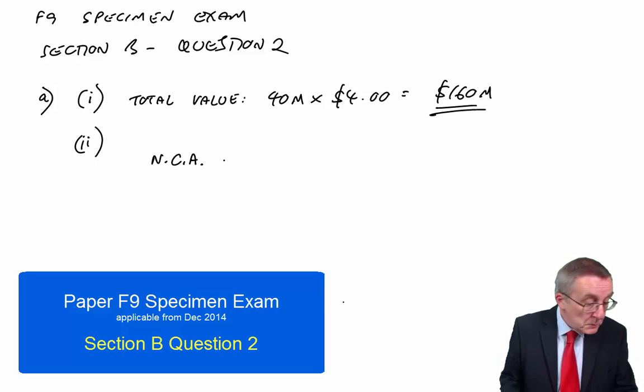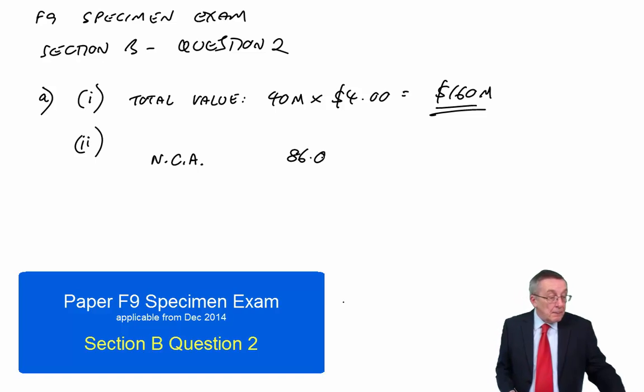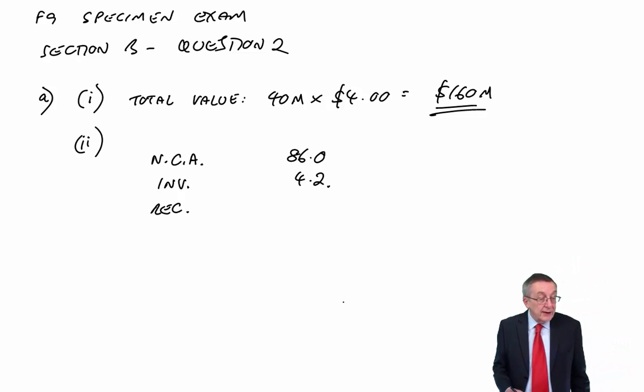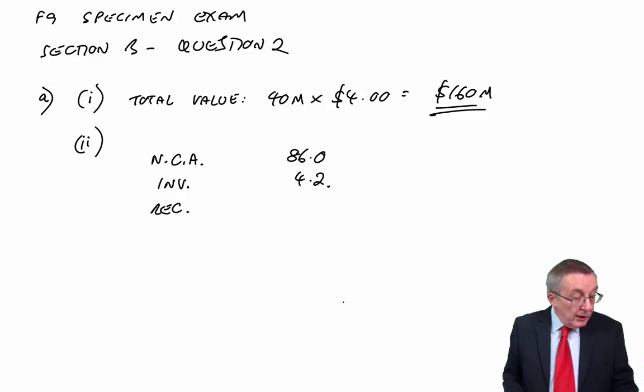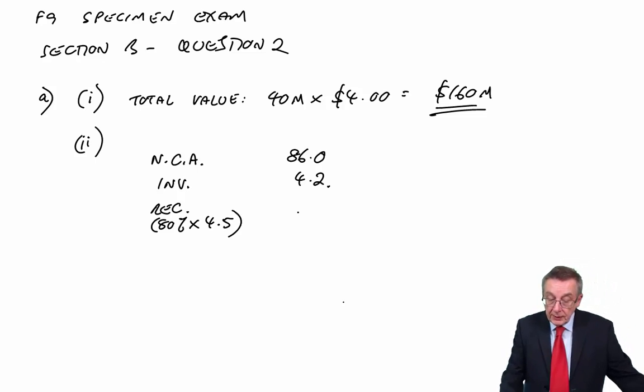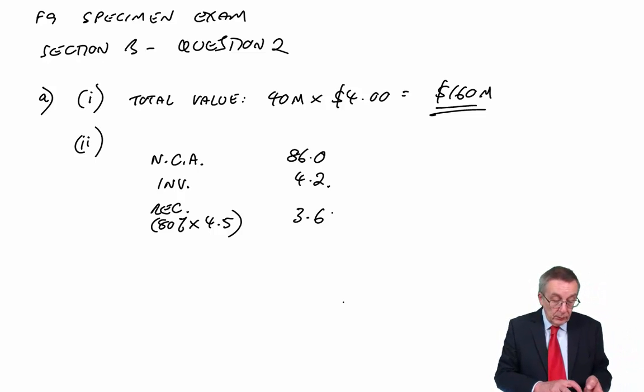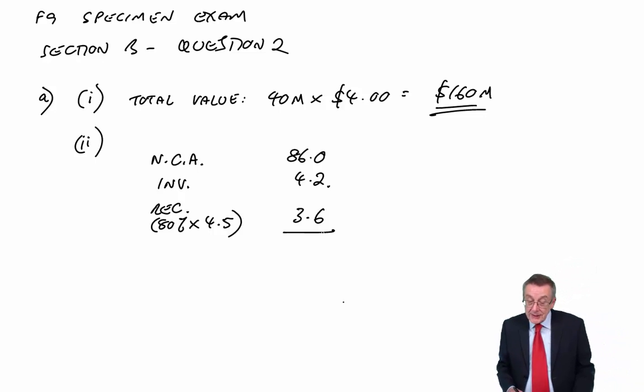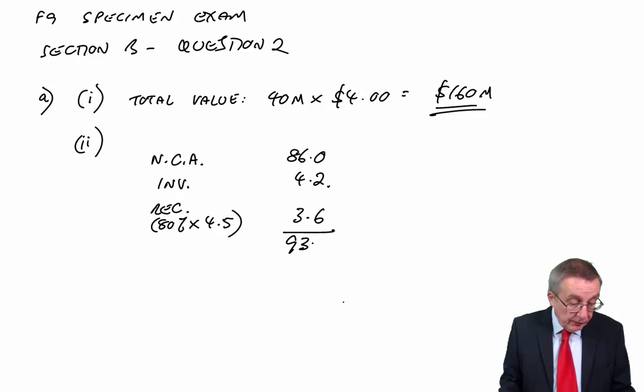The non-current assets. On the statement of 91, but the realisable value is 86. The inventory on the statement is 3.8, but the realisable value, which is what we're told to use, is 4.2. The receivables on the statement of 4.5, but it says, we want a liquidation basis, that only 80% will be collectible. So 80% of 4.5 is 3.6. So the value of the assets is 90.2, 93.8.